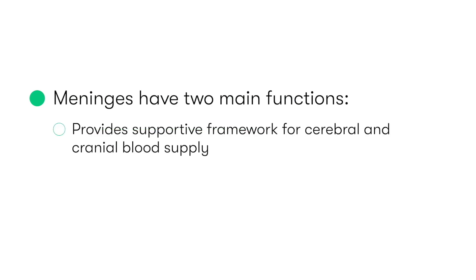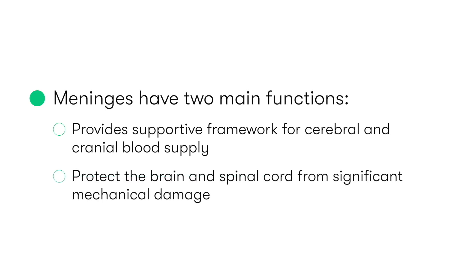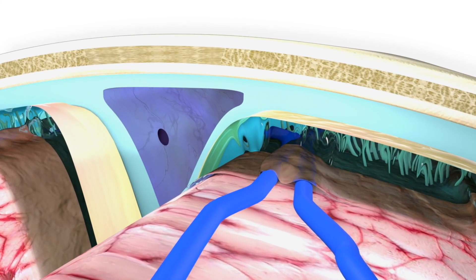The meninges have two main functions. First, it provides a supportive framework for both the cerebral and cranial blood supply. Second, acting with the aid of the cerebrospinal fluid or CSF, the meninges protect the brain and spinal cord from significant mechanical damage — essentially acting almost like a shock absorber for the brain during fast movement of the head.